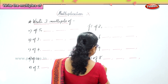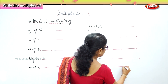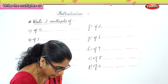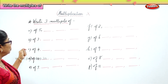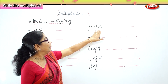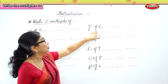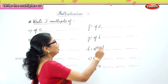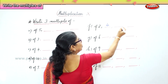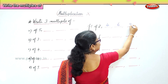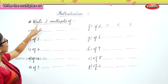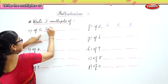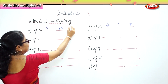Eleven — we can write eleven: one, two, three. Now let's do the fill up of the multiples of these numbers. Write three multiples of two: two, four, six, eight.